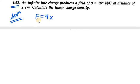So here we are given the electric field E = 9 × 10^4 Newton per coulomb at a distance of 2 centimeter. That means r = 2 centimeter. Now we need to convert centimeter into meter, so it will be 2 × 10^-2 meter. Now we need to find the linear charge density, that is lambda.